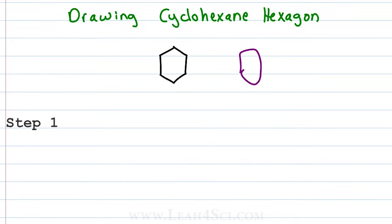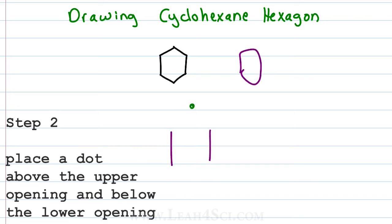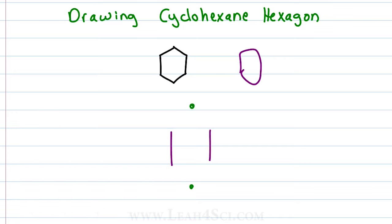Step 1, you're gonna draw two parallel lines like this. They don't have to be perfect, somewhat next to each other. Step 2, place a dot between the parallel lines, one towards the upper opening and the second towards the lower opening. And third, connect the dots. Now look at that, it's not a very pretty hexagon but it's very clear and very obvious.